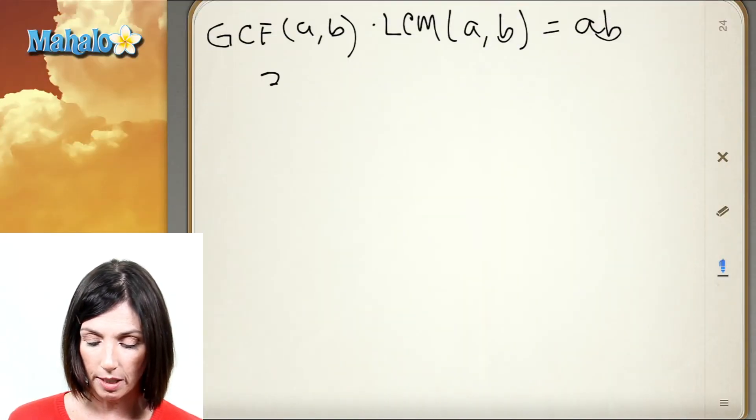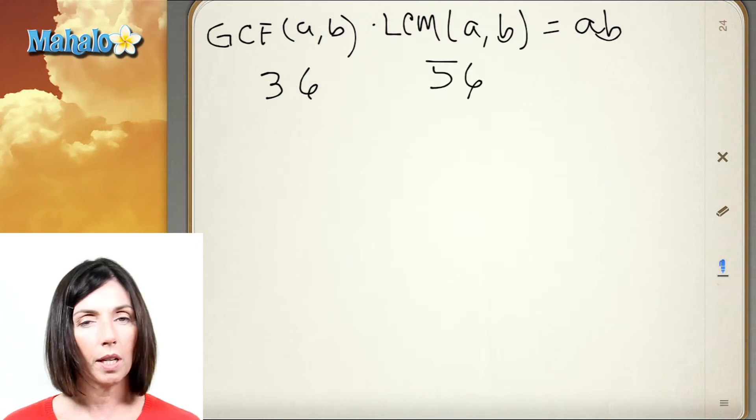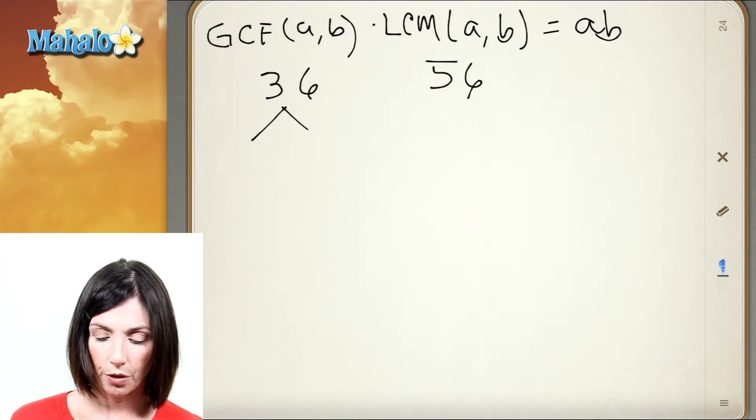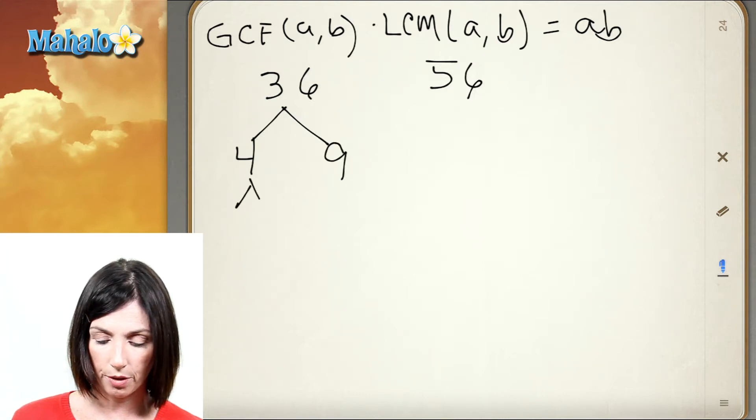Let's look at the numbers 36 and 56. So the first thing I'm going to do is find their prime factorization. 36 is 4 times 9 and that factors into 2 times 2 times 3 times 3. So I have 2 squared times 3 squared.